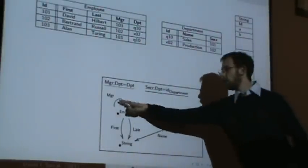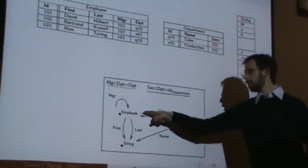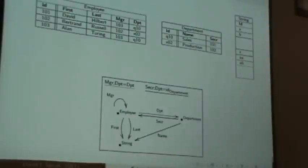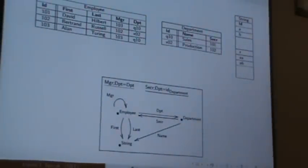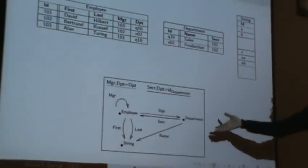And you could also say that if I do MGR followed by DPT, that's the same thing as just doing DPT straight. And that secretary followed by department just is ID on department. And then by doing that I've given you a - well it turned out that of course this is a category.